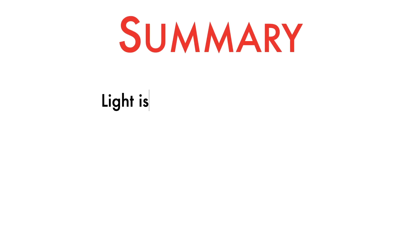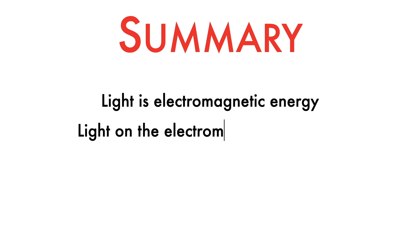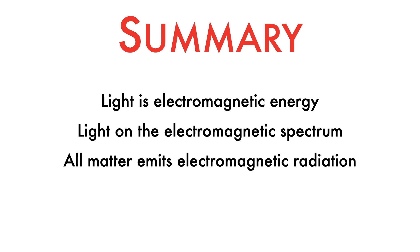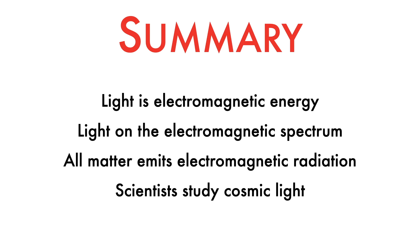To recap: light is electromagnetic energy that travels immensely fast and has wave-like properties. It can be found on a spectrum ranging from low-energy radio waves to high-energy gamma rays. All matter in the universe emits some form of electromagnetic radiation, and scientists use a variety of instruments to study cosmic light. Well, that wraps up our video on light. I hope you enjoyed it and look forward to seeing you next time.